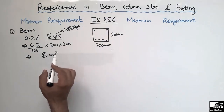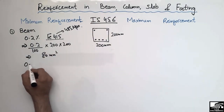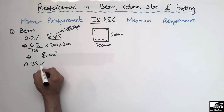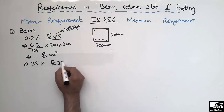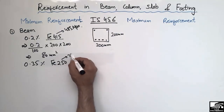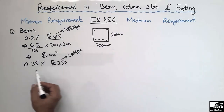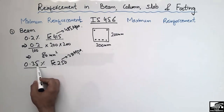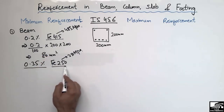If you are using another grade of steel, this requirement comes out to be 0.35 percent. If you are using Fe250, which is a lower-grade steel with a yield strength of 250 MPa, then the minimum beam reinforcement requirement is 0.35 percent. It is higher than 0.2 percent because the strength of the bar is lower.